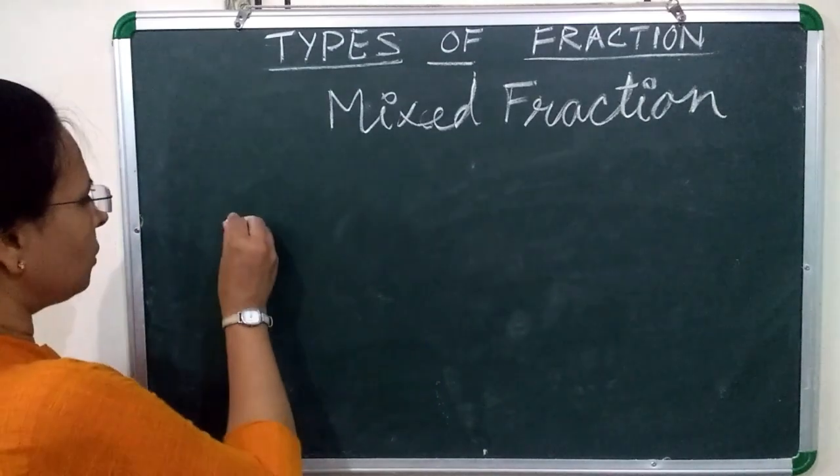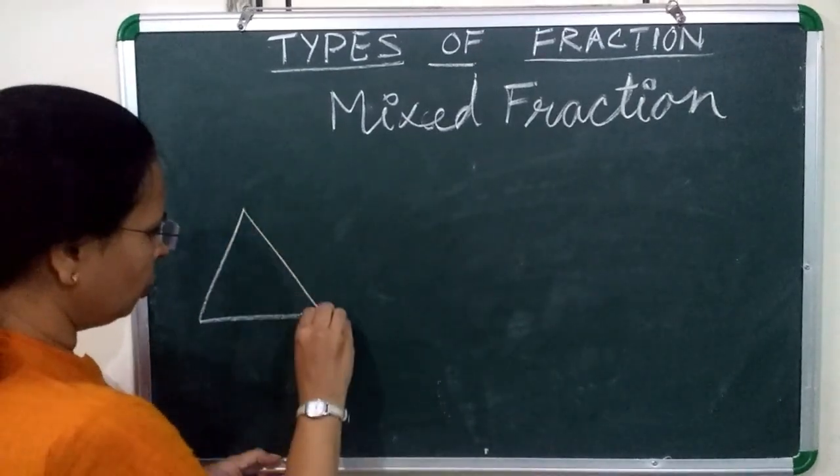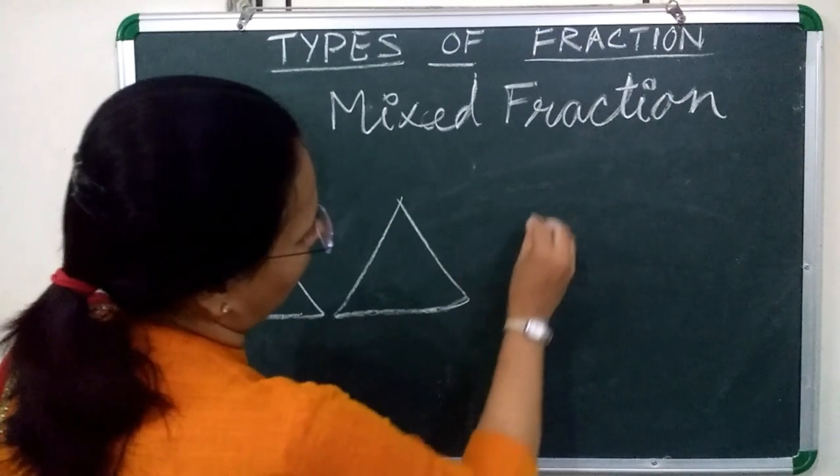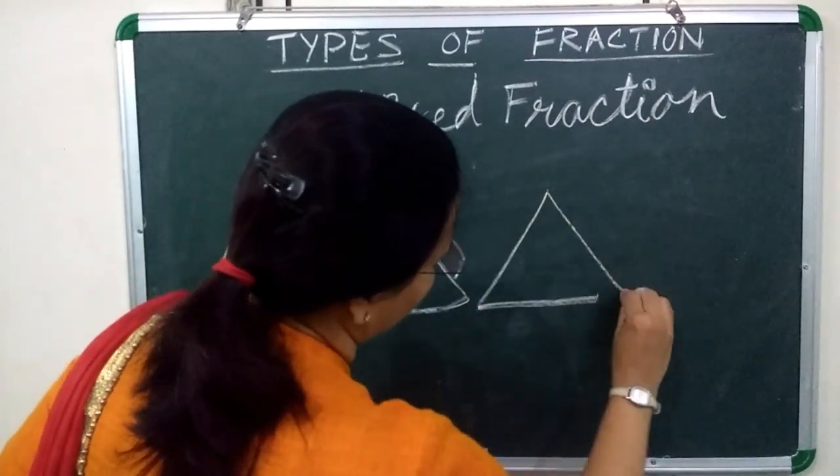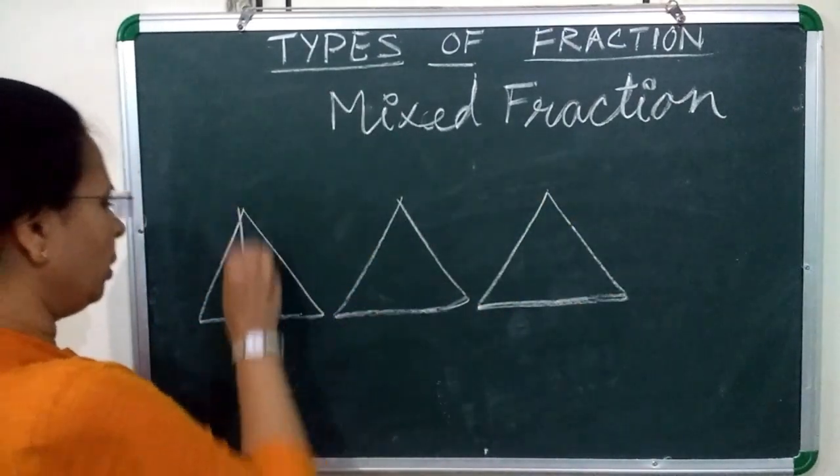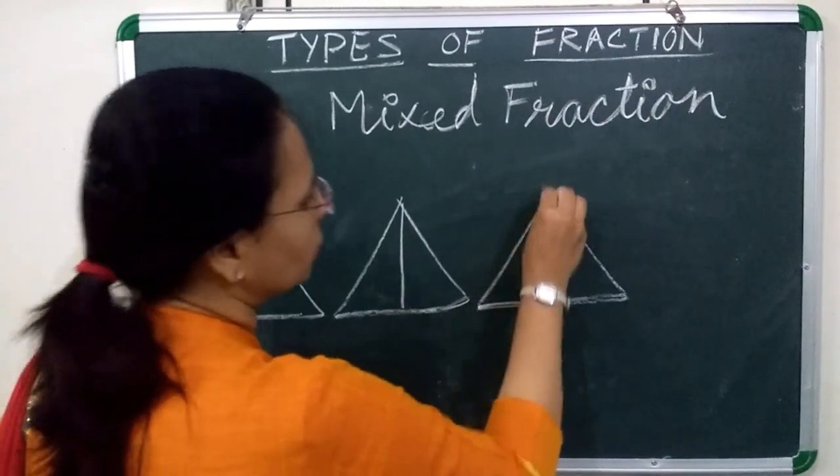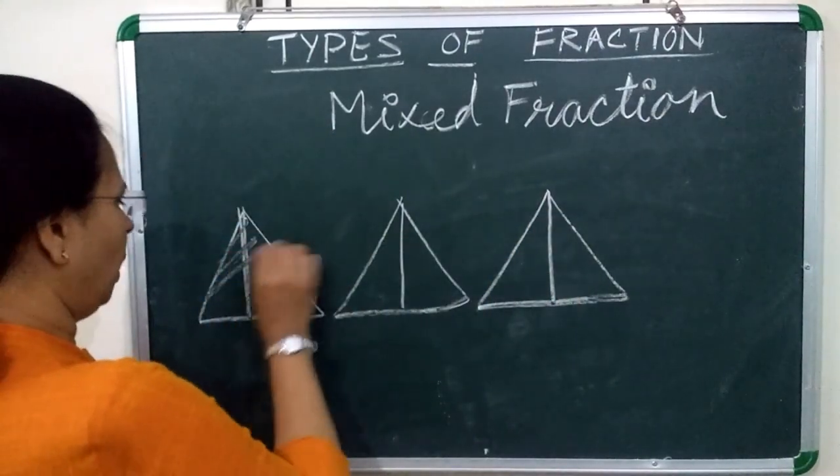You can better understand from this figure, children. Now see, I am making triangles. There are 3 triangles and these triangles are divided into 2 equal halves.